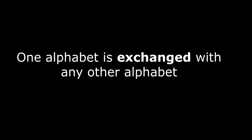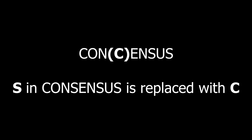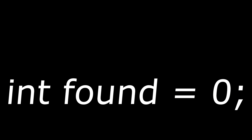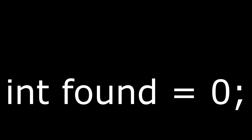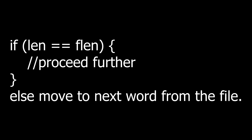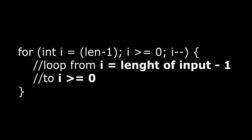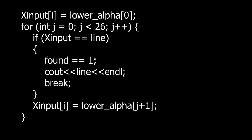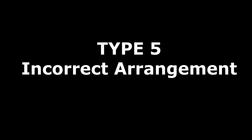Type 4: exchanged character. In this type of mistake, one alphabet is exchanged with any other alphabet. For example, if the user enters the spelling of 'consensus' as 'concensus', the first 's' in 'consensus' is replaced with 'c'. We can solve this type of problem as follows: declare an integer variable 'found' and initialize it with zero. Check the length of input and word from file — if lengths are equal, proceed; otherwise take the next word from the file. Start a loop from i equals length of input minus one to i greater than or equal to zero. Exchange the i-th character of input with the i-th element of the global character array. Compare it with the word from the file. If both strings are equal, print the word from the file, make found equals one, and break loops. At the end, return the value of found.